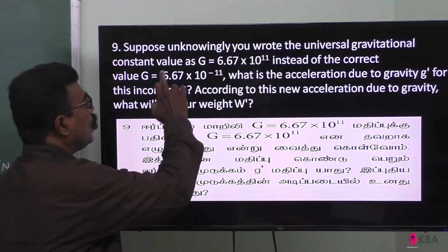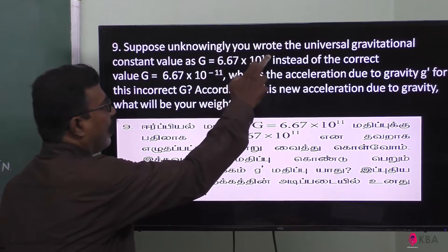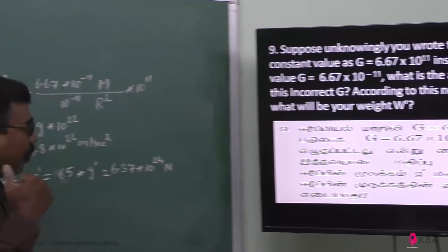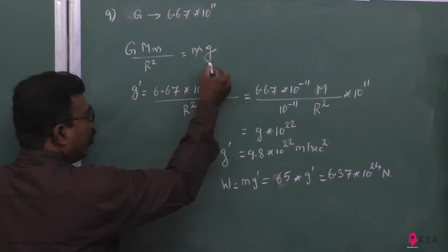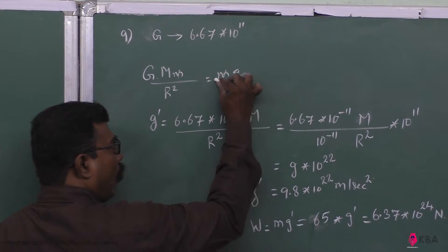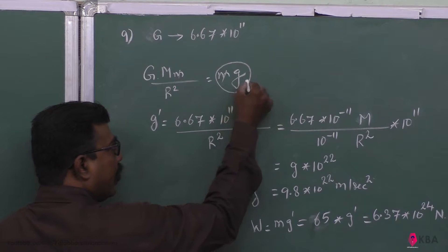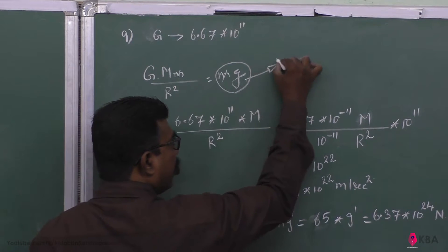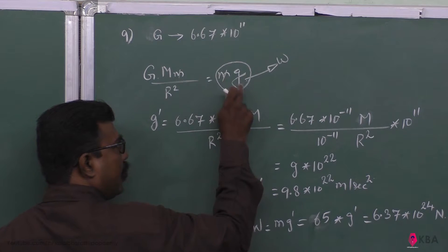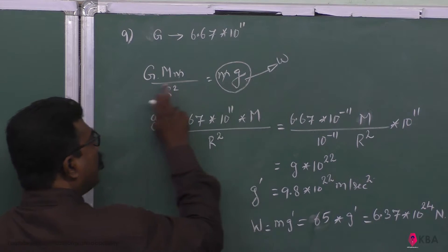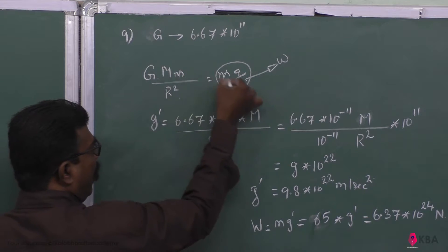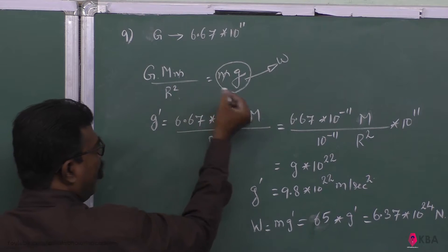Let us investigate. This is the correct value. Now let us try to understand. Acceleration due to gravity — mass into acceleration is force. This is the weight. Weight is due to this mass, so this is m into g. This force is equal to the force exerted by Earth: G into M into m divided by r squared.